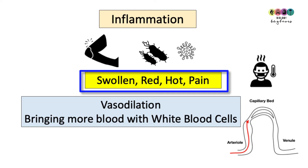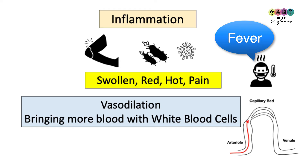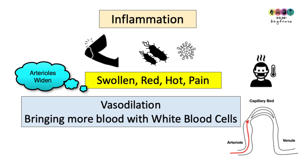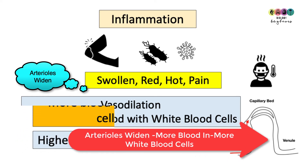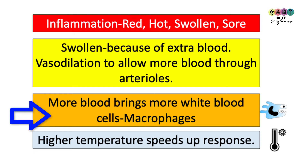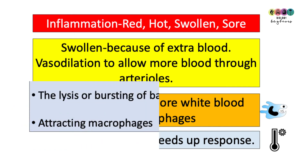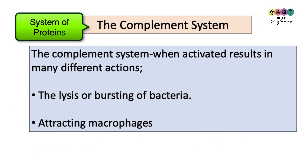Inflammation is generally signified by areas becoming swollen, red, hot, and painful. If you have all-over inflammation, it's fever. Part of this is down to vasodilation — the arterioles in that area widening — which brings more blood to the area, and in particular more white blood cells, especially macrophages.